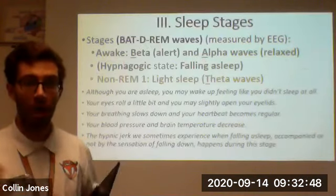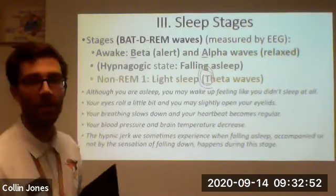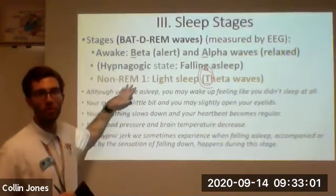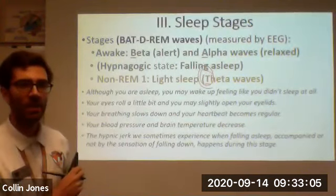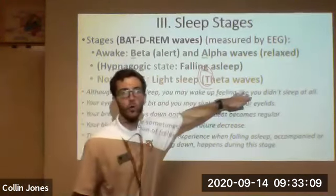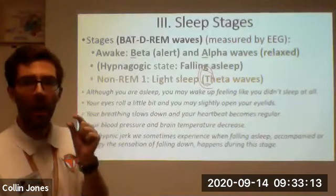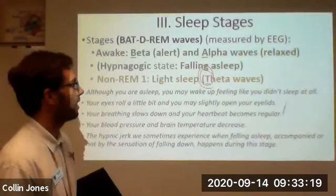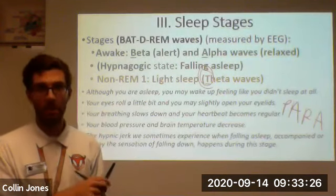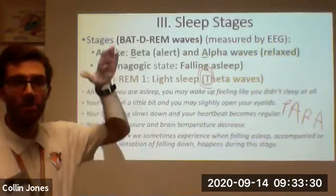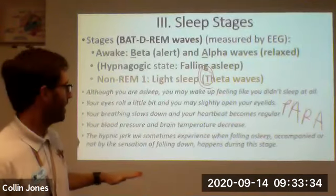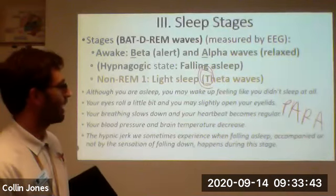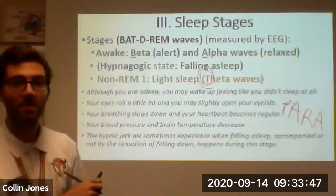When you cross that line and fall asleep, you are now giving off theta waves. We call this first stage of sleep Stage 1, or non-REM 1. It's when you just fall asleep. At this point, if something wakes you up, you may feel like you weren't actually asleep. Your eyes may roll back, eyelids could still be open. Your parasympathetic system kicks in — slower heart rate, slower breathing, lower blood pressure, lower body and brain temperature. Sometimes you'll twitch, like you're falling. That's all non-REM 1.